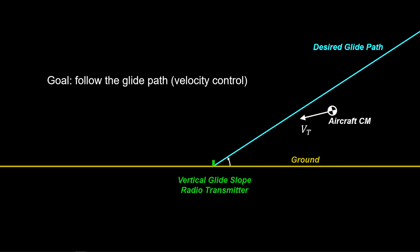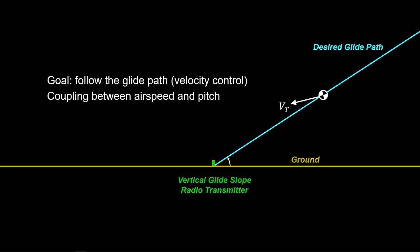We want the aircraft velocity vector to align with the glide path while holding a specific magnitude. But as the aircraft pitches to follow the glide path, it simultaneously creates a change in airspeed which will not correspond to the desired airspeed. Thus, the control system must address the coupling between airspeed and pitch dynamics.